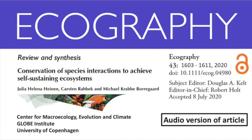It is often an implicit assumption of management that a functional interaction network of species will be restored once species' abundances reach a certain level. Empirically, however, this has not always been the case, as disturbances may alter behaviour that controls interactions. For example, native seed dispersers may prefer to eat invasive fruits over native fruits, weakening the interaction between seed disperser and native fruit.